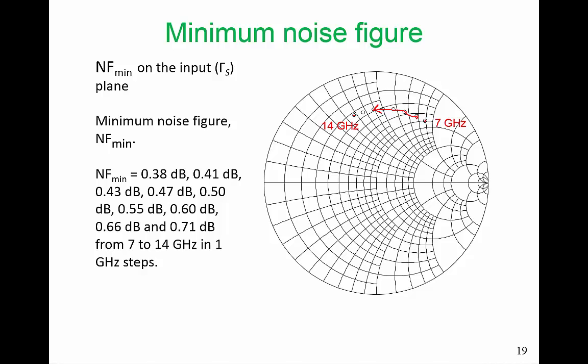For our particular transistor, NF-min here at 7 GHz is 0.38 dB. At that point, when we have gamma-S at that point, at 8 GHz we have 0.41 dB. And as we get up to 14 GHz, at 14 GHz, this is gamma-S opt. We're on the gamma-S plane. So any point plotted on this chart is gamma-S. So when gamma-S has that value, the noise figure at 14 GHz will be 0.71 dB.